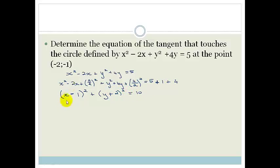So therefore, our circle has got a center. Our circle's center is at 1 minus 2. Our radius is root 10. So let's just draw a little rough circle here.